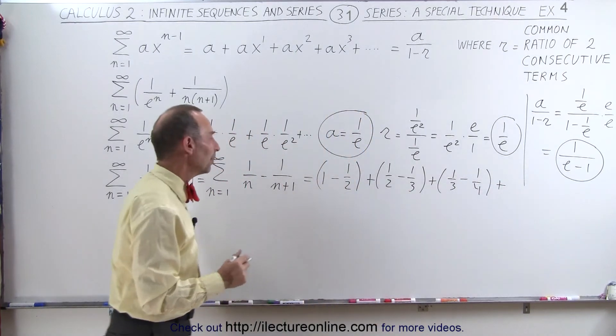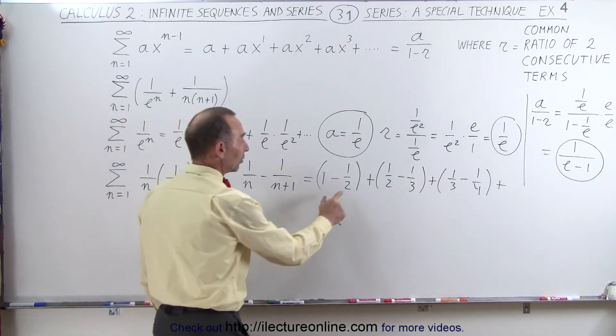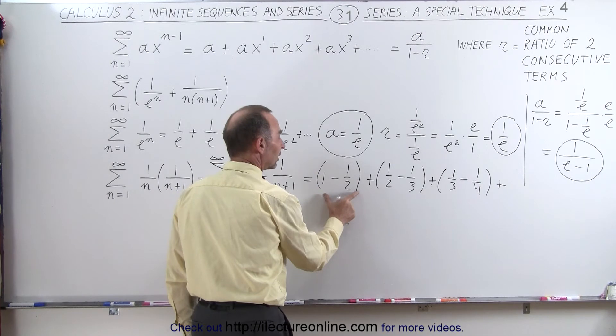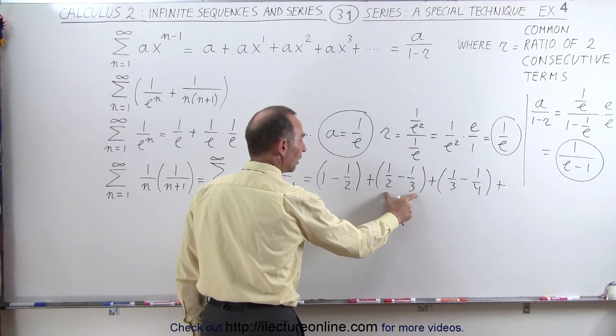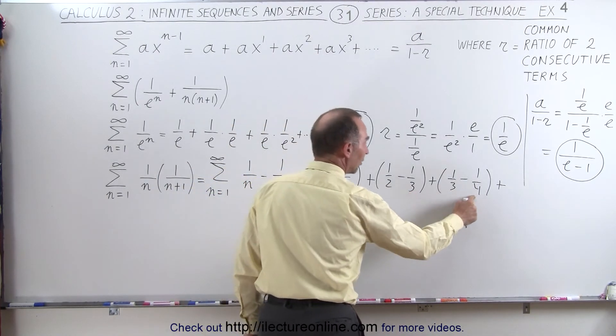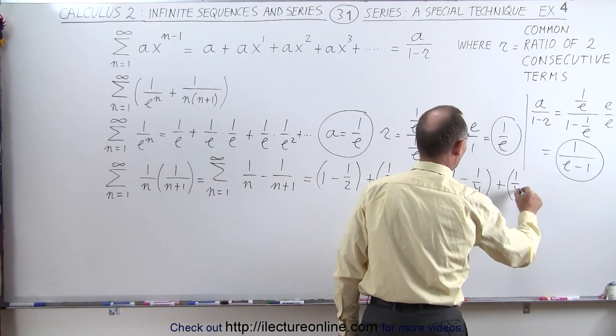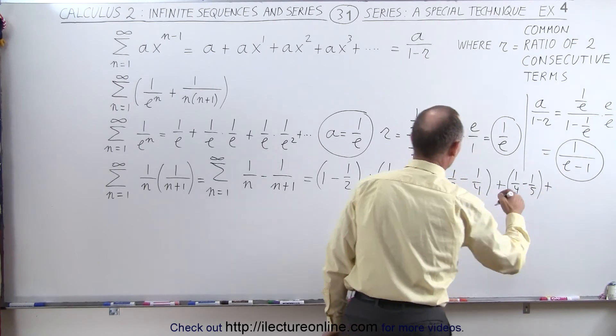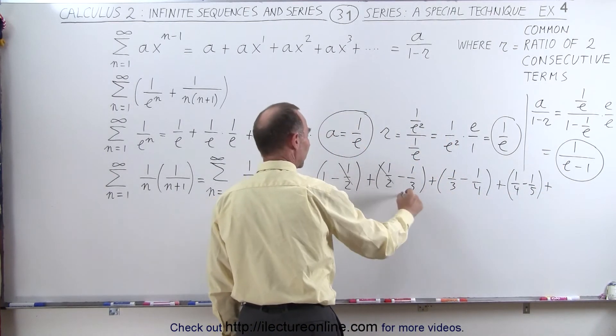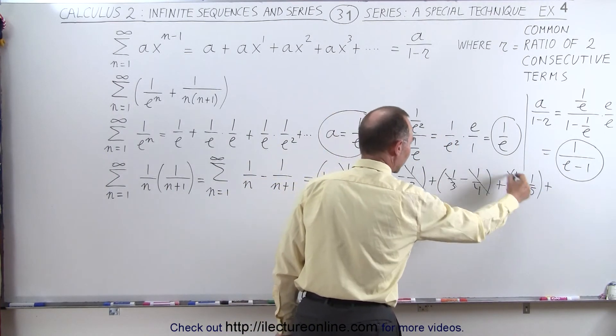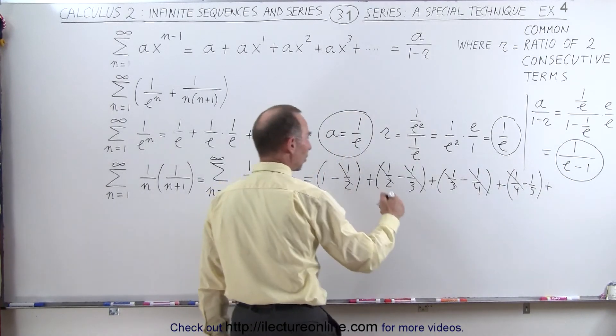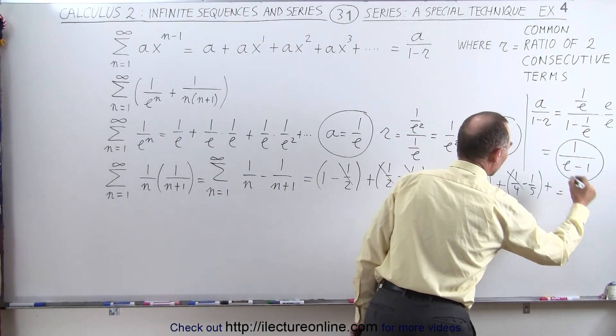And then we begin to realize that the second term of the first two will cancel out the first term of the next two, and this one will cancel out this. This simply becomes 1 fourth minus 1 fifth, and so forth. So this cancels out this, this cancels out that, and so forth. So this whole sum is simply equal to 1.